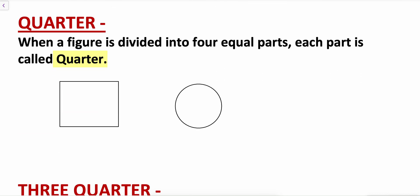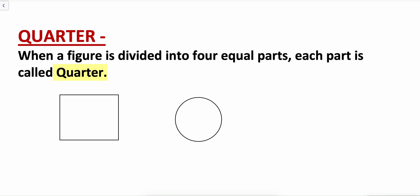Now, what do you mean by quarter? When a figure is divided into four equal parts, then each part is called a quarter. Suppose this is a square and if I divide this square into four equal parts, this is one part out of four. This will be written as one by four in fraction. This part is also one by four, this part is also one by four, and this is also one by four.